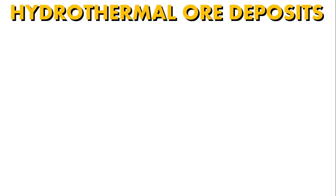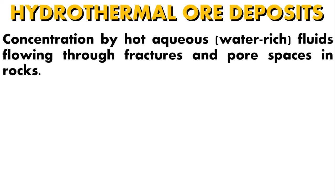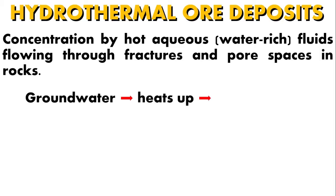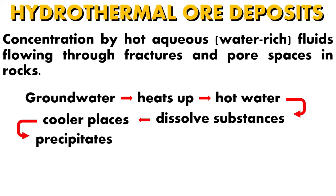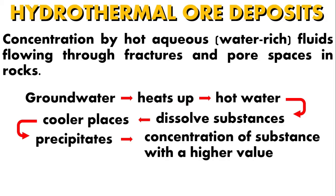Next, we have hydrothermal ore deposits. Hydrothermal ore deposits refer to concentration by hot aqueous fluids flowing through fractures and porous spaces in rocks. The process involves groundwater circulating to depth, where it is heated up either by coming near a hot igneous body or by circulating along the geothermal gradient. This hot water can dissolve valuable substances throughout large volumes of rock. As it moves into cooler areas, the dissolved substances are precipitated from the hot water solution. If the cooling takes place rapidly, then precipitation will take place over a limited area, resulting in high concentrations of the substance.